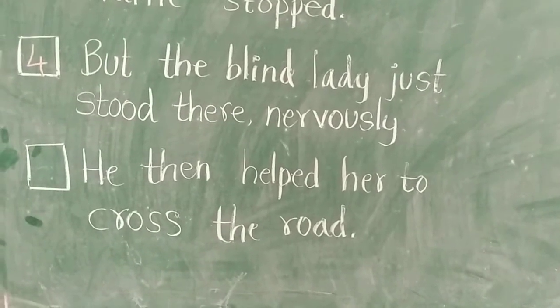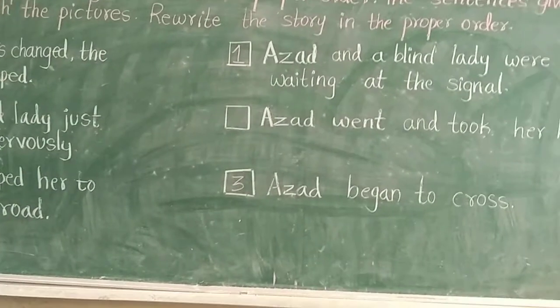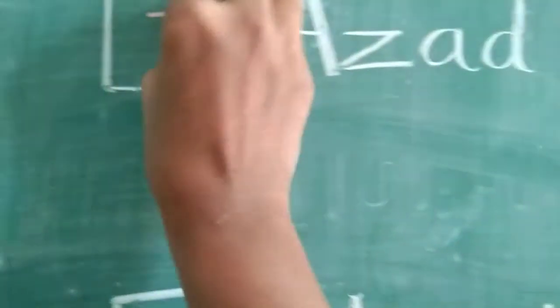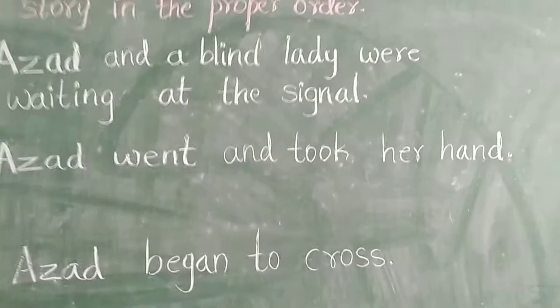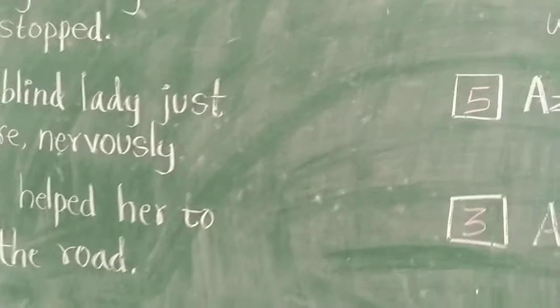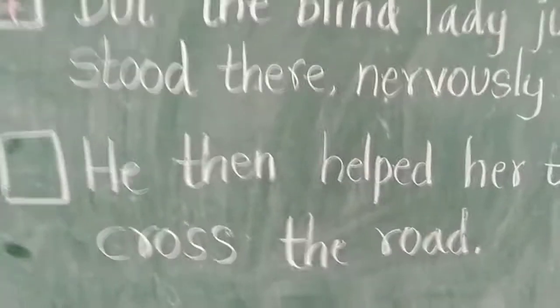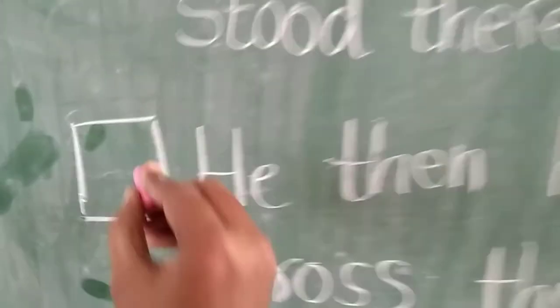And in the fifth picture — Azat went and took her hand, that blind lady's hand. This sentence will be the fifth sentence of the story. And next, in the last picture they both were crossing the road, so the last sentence is: He then helped her to cross the road. This is the sixth sentence of the story.